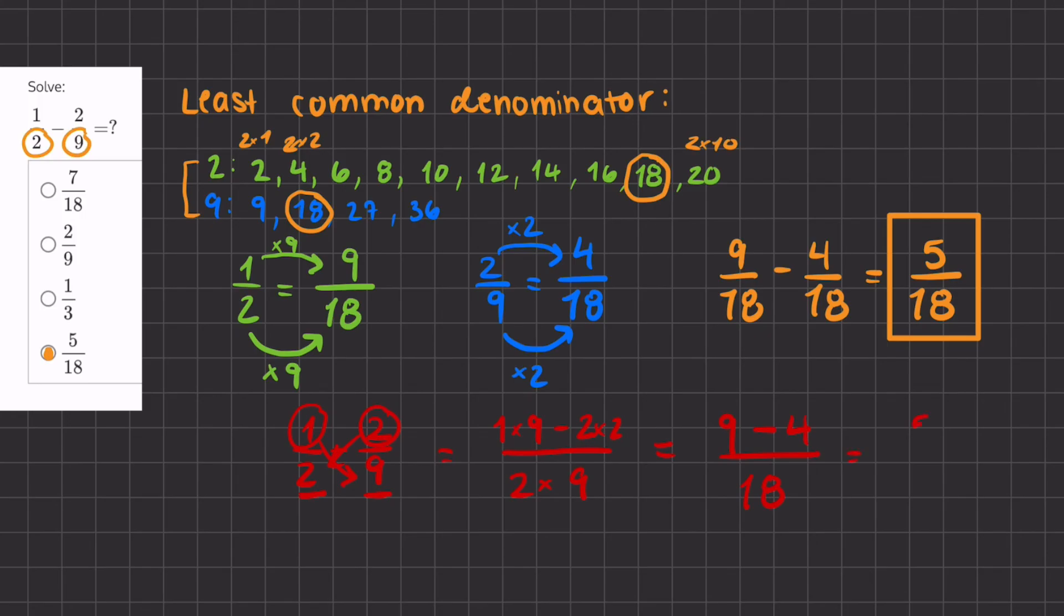We have 9 minus 4, which is 5. And our common denominator stays the same, 18. So both ways give us the same answer for this question.